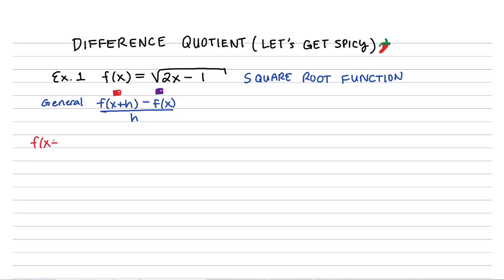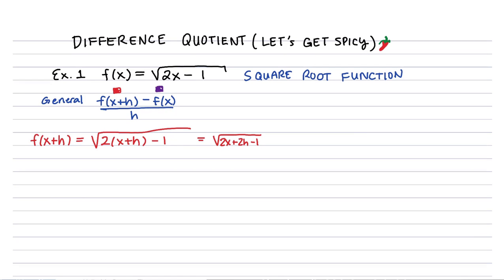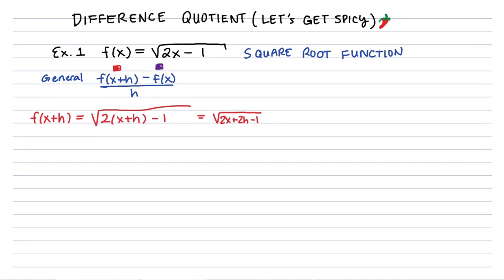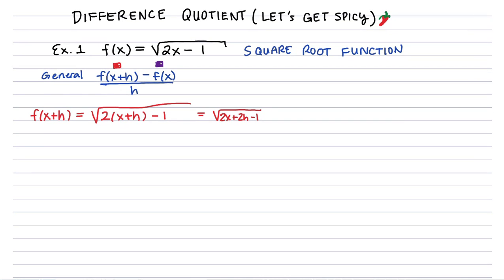We'll color code that with red. f of x plus h would be square root of 2 times x plus h minus 1, and simplifying that we get 2x plus 2h minus 1. Now let's take a look at the f of x, we already have that piece done. So now we're ready to go ahead and substitute into our difference quotient formula. Square root of 2x plus 2h minus 1, and then subtract f of x all over h.